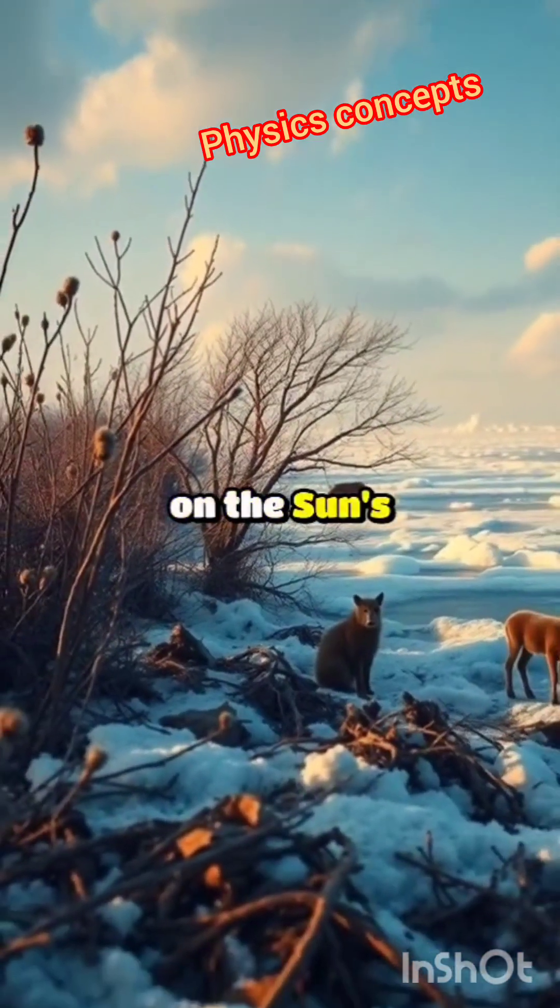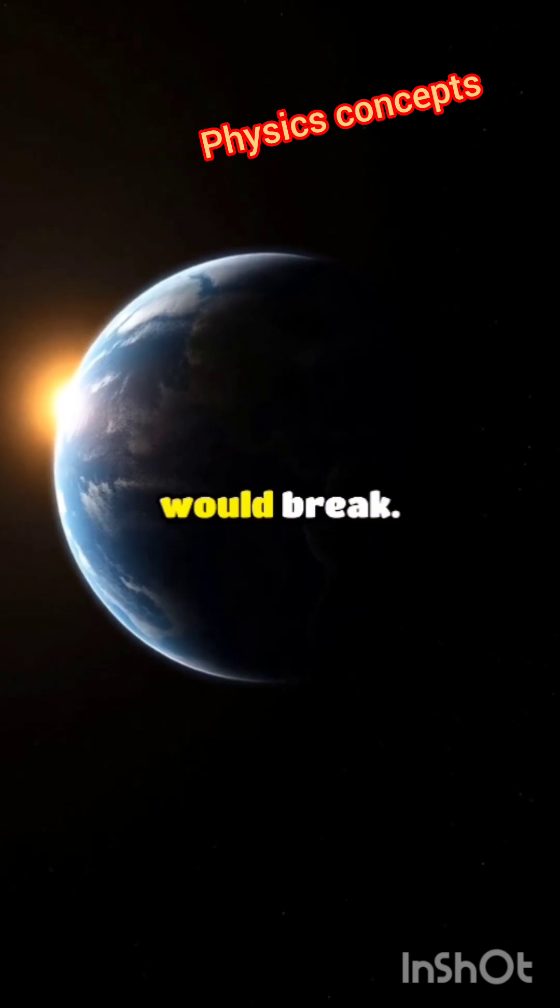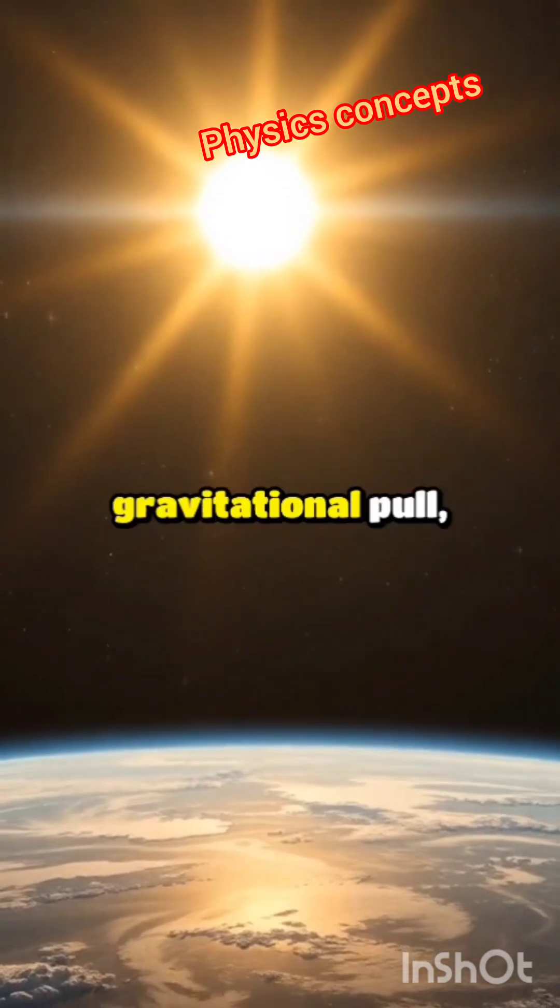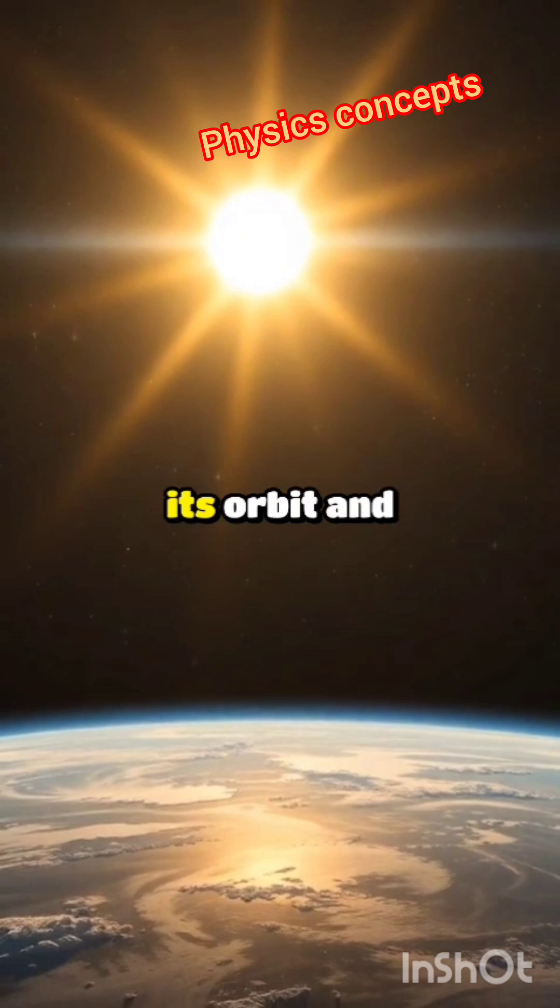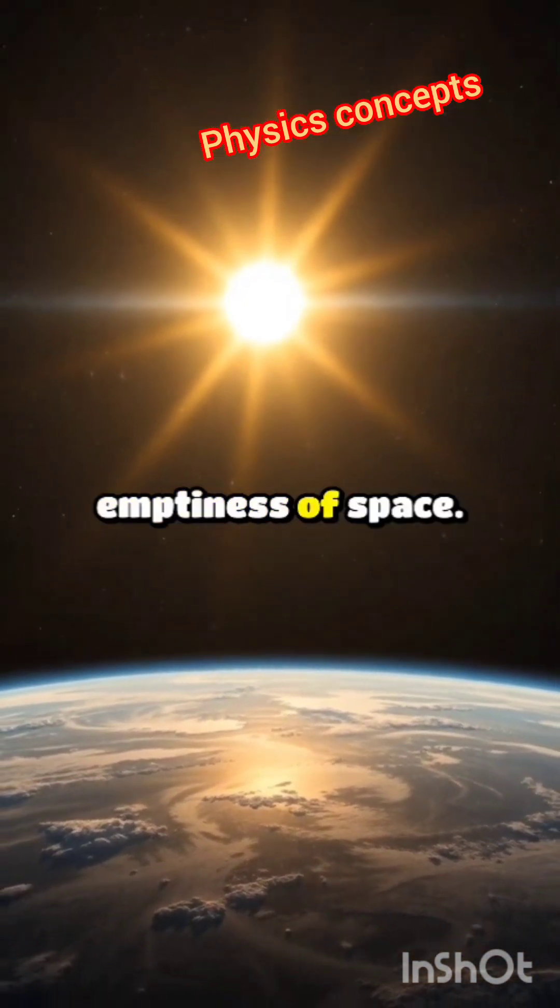Every ecosystem reliant on the sun's warmth would collapse. Moreover, the gravitational bond between earth and the sun would break. Without the sun's gravitational pull, earth would cease its orbit and drift off in a straight path into the vast emptiness of space.